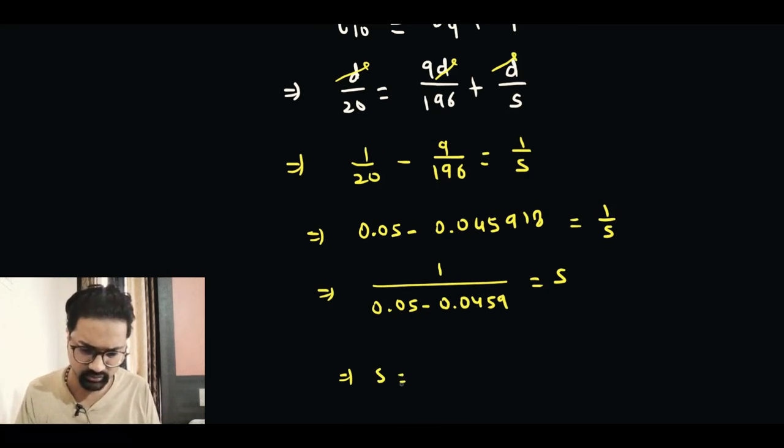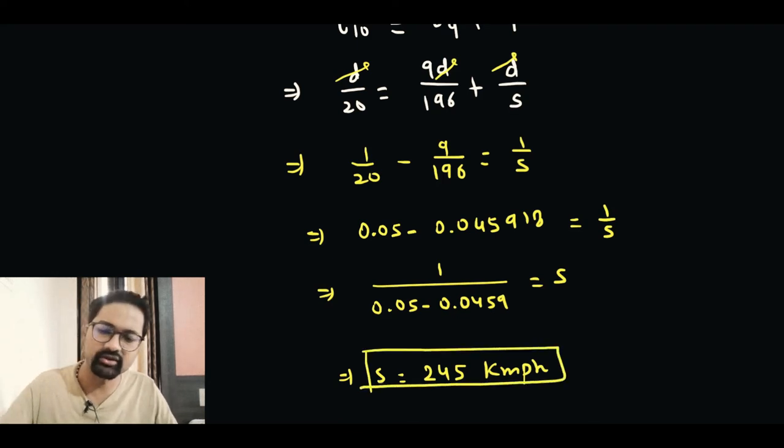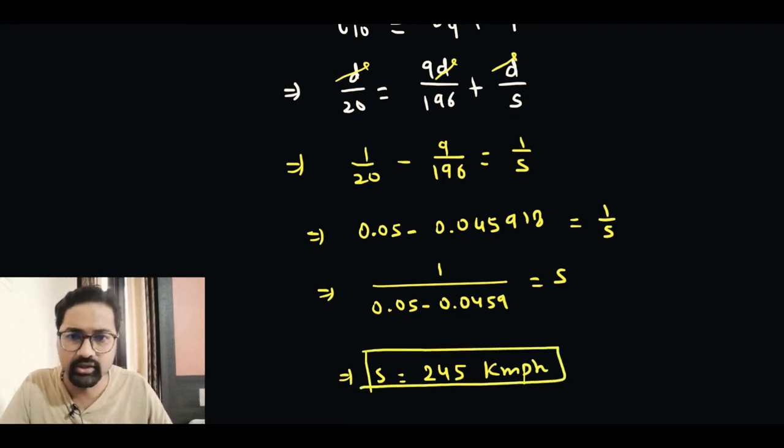From here, the value of S comes out as 1 over this value, which comes out as 245 kilometers per hour. So that will be the average speed of the last lap in order to maintain these criteria. I hope this video was helpful. If there are any questions or doubts on this particular question, feel free to post it down in the comment section. See you in the next video. Take care, bye.